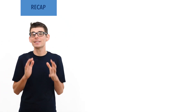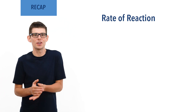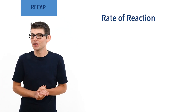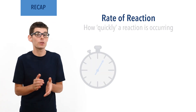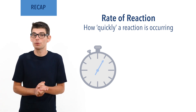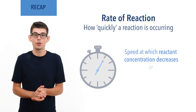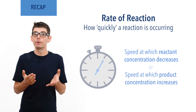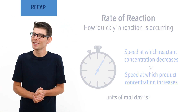Before we talk in detail about clock reactions, it is essential you are comfortable with what we mean by a rate of reaction. If unsure, please check out the videos just mentioned. As a quick outline for this video however, rates of reactions describe how quickly reactions are occurring. They can be measured in terms of the speed at which reactant concentration decreases, or the speed at which product concentration increases, giving the units moles per decimetre cubed per second. Quick recap done, let's go!